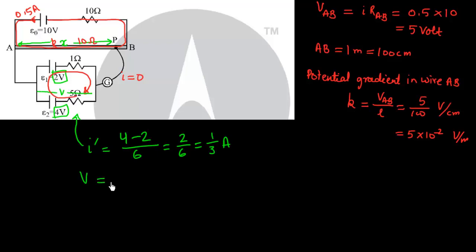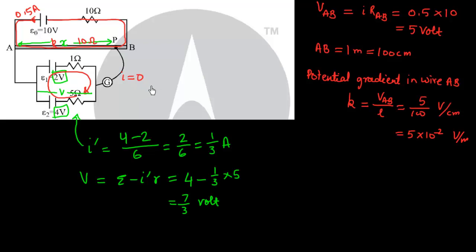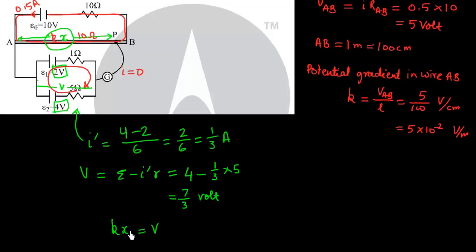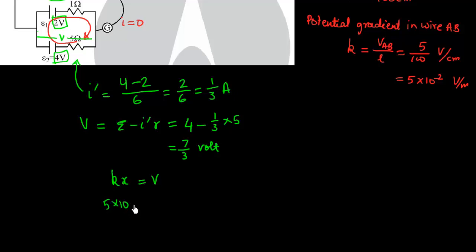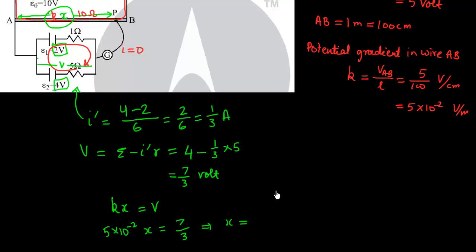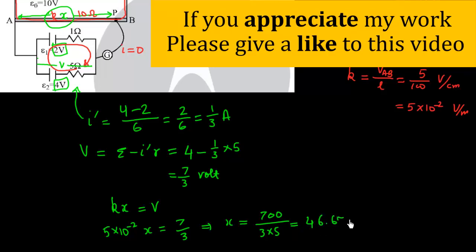The voltage across the cell V equals E minus I dash R. So V equals 4 volt minus one-third times 5, which equals 7 by 3 volt. When null deflection is obtained, KX equals the voltage V. So K times X equals 7 by 3. With K equal to 5 times 10 to the power minus 2, X equals 700 upon 3 times 5, equal to 46.67 centimeters.